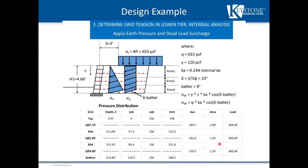These are the calculated grid tensions, taking into account earth pressure and dead load surcharge. In the upper layer, we have 369 PLF. In the middle layer, 309 PLF. In the lower layer, 360 PLF. We check grid strength, connection strength, and pullout strength against these values. These tensions also match the KeyWell Pro results.